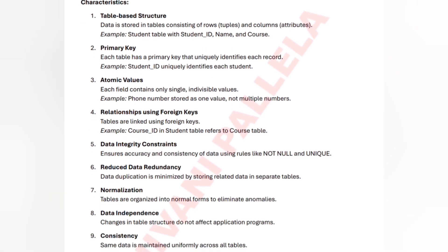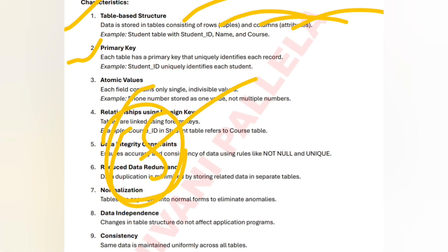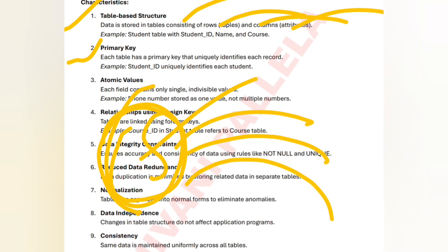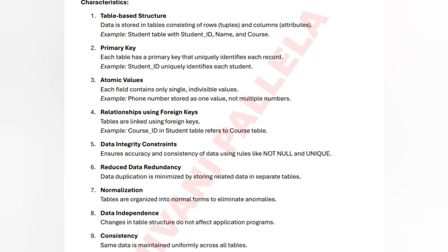The features of relational database design: The first one is table-based structure — whatever data you have, you organize it in a table, like student name, student ID, student course, student phone number. Next is primary key — a primary key is the unique key which identifies each record. For example, 'student ID' is a primary key; if you enter it, you get student name, student course, student phone number — everything.